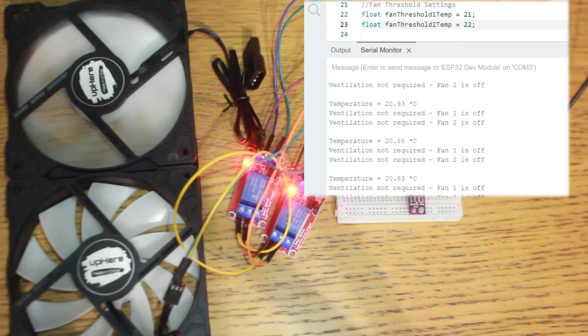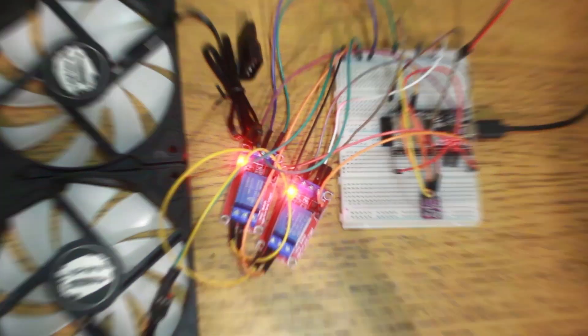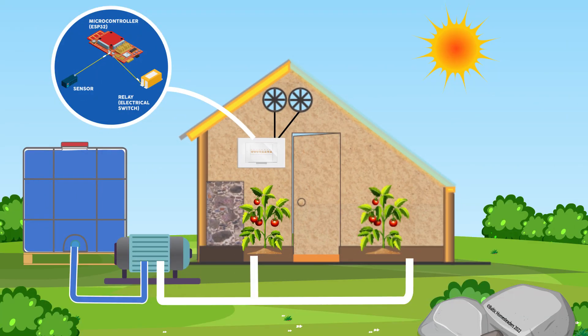Light's gone off, fan slows down as it's turned off and that's done. All working great. Okay, back to our greenhouse.